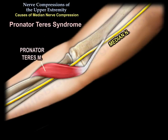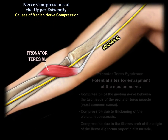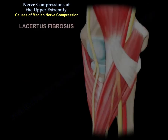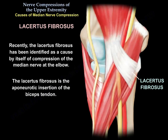Pronator teres syndrome affects the median nerve. Potential sites of entrapment include: compression between the two heads of the pronator teres muscle (most common cause), thickening of the bicipital aponeurosis, the fibrous arch of the origin of the flexor digitorum superficialis, and the lacertus fibrosus, which has been identified as an independent cause of compression of the median nerve at the elbow. The lacertus fibrosus is the aponeurotic insertion of the biceps tendon.